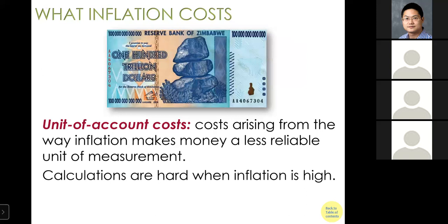The third cost is the unit of account cost — costs arising from the way inflation makes money a less reliable unit of measurement. Households and businesses may abandon the currency because it becomes useless. For example, the central bank of Zimbabwe printed a 100 trillion dollar note worth only about 10 US dollars. This forces the central bank — and effectively the government — to lose a big revenue source: the ability to print money.